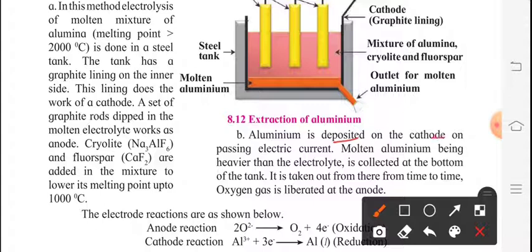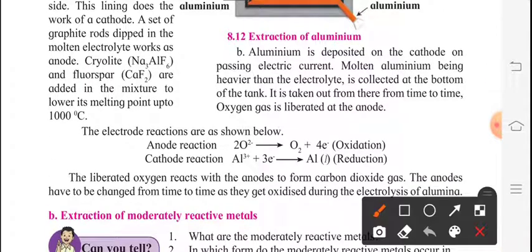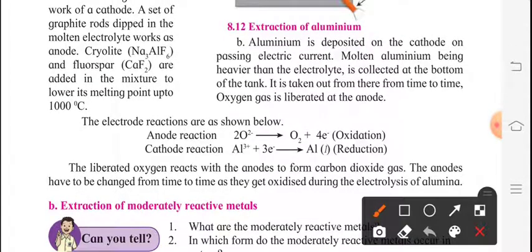Aluminium is deposited on the cathode on passing electric current. Molten aluminium, being heavier than the electrolyte, is collected at the bottom and is taken out from time to time. Oxygen gas is liberated at the anode. The electrode reactions are: at the anode, 2O²⁻ → O2 + 4e⁻ (oxidation); at the cathode, Al³⁺ + 3e⁻ → Al (reduction). The liberated oxygen reacts with the anodes to form carbon dioxide gas. The anodes have to be changed from time to time as they get oxidized during electrolysis.